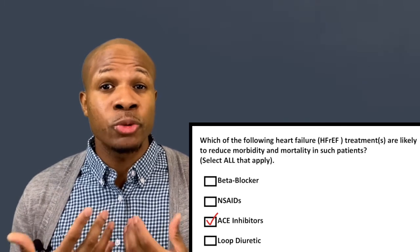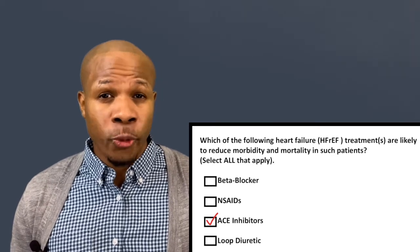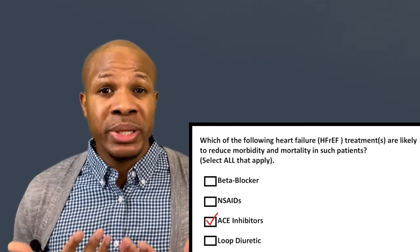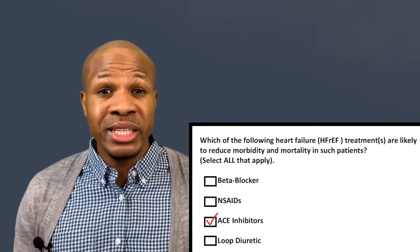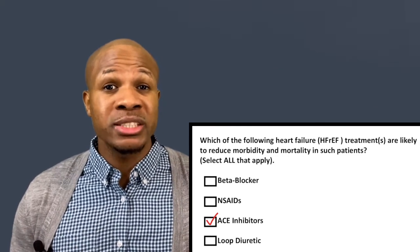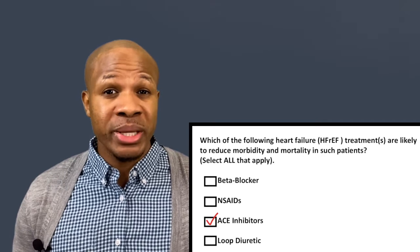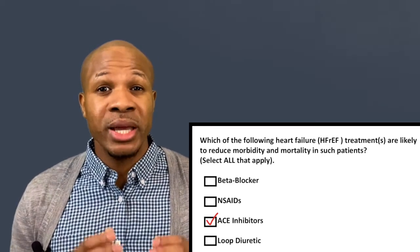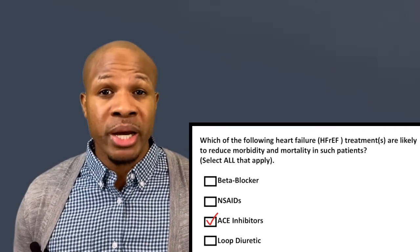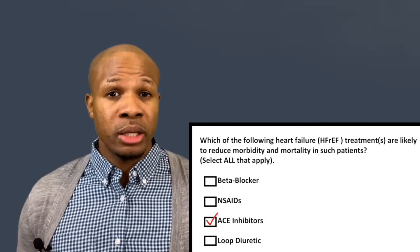ACE inhibitors have been shown to lower the rate of remodeling, so the heart is better able to maintain a decent structure over a longer period of time. Since it is the heart that determines how long you can live, ACE inhibitors decrease mortality. Loop diuretics only control symptoms.